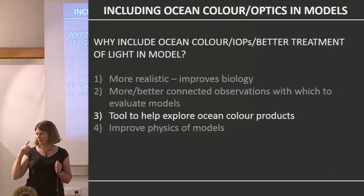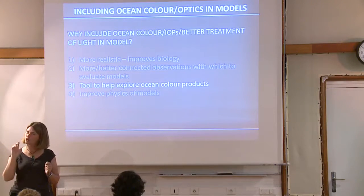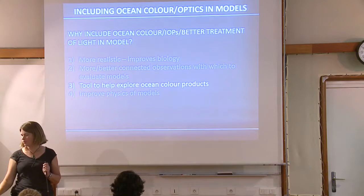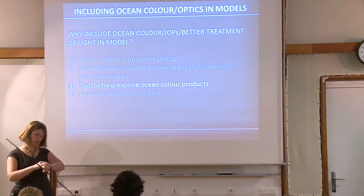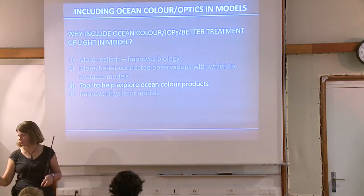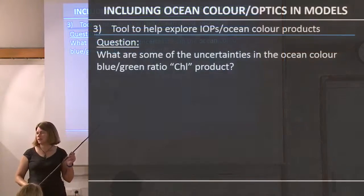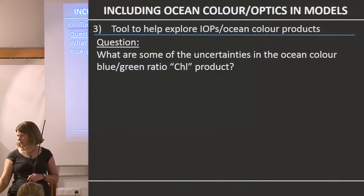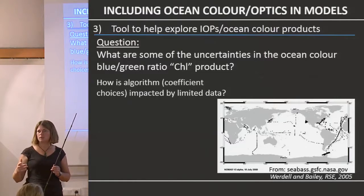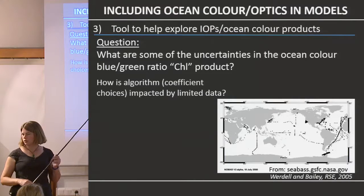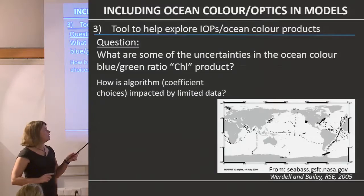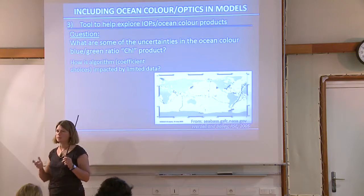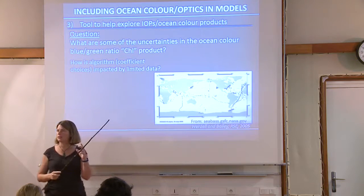There's another way this is useful. We can use the model to explore uncertainties in ocean colour products — specifically the blue-green ratio chlorophyll algorithm. The algorithm used by NASA or ESA is based on a large but not terribly well distributed set of simultaneous chlorophyll and radiometric observations. Those coefficients are found from a small number of datasets. What happens if we had perfect knowledge?